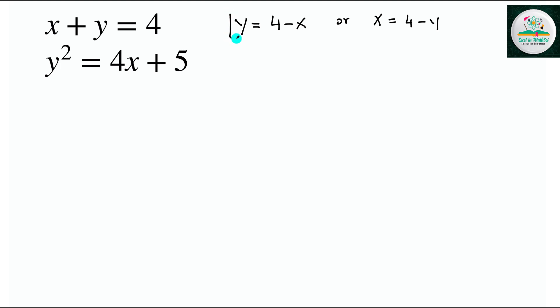What we'll do is substitute this in for y into equation number 2. So we'll rewrite this. Instead of y squared, we'll have 4 minus x squared. So if you do 4 minus x all squared, that will equal 4x plus 5.